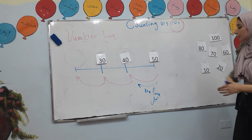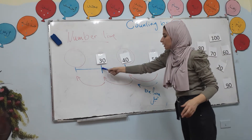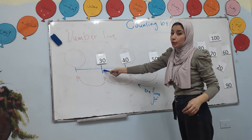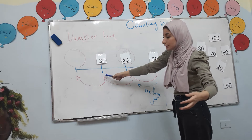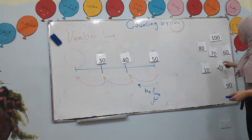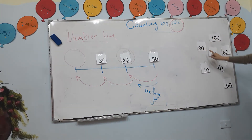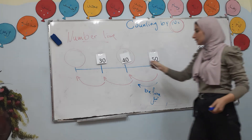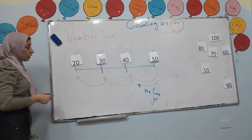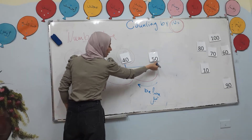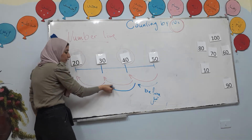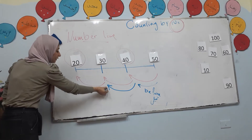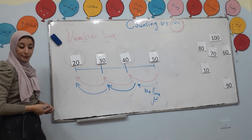Good job! So: 50, 40, 30. What's the number? You can tell me the number that comes before 30. Yes, it's 20! Good job. So, the number before 50 is 40, the number before 40 is 30, and the number before 30 is 20. Right?